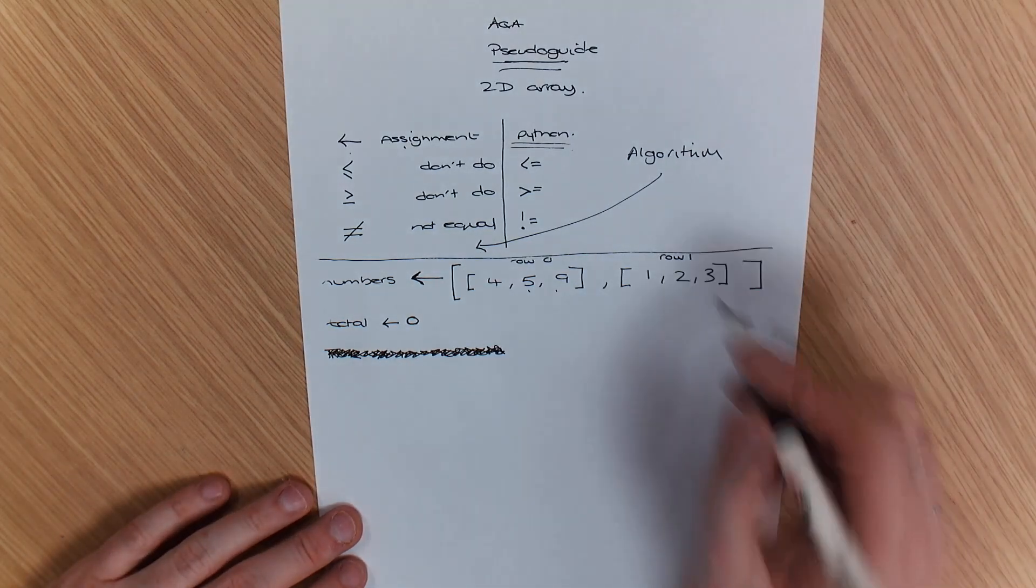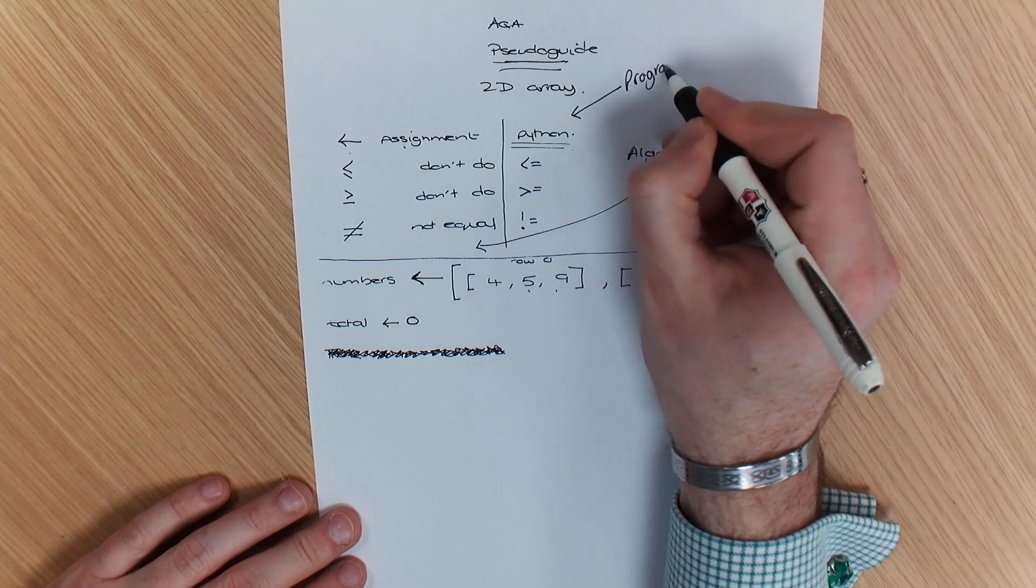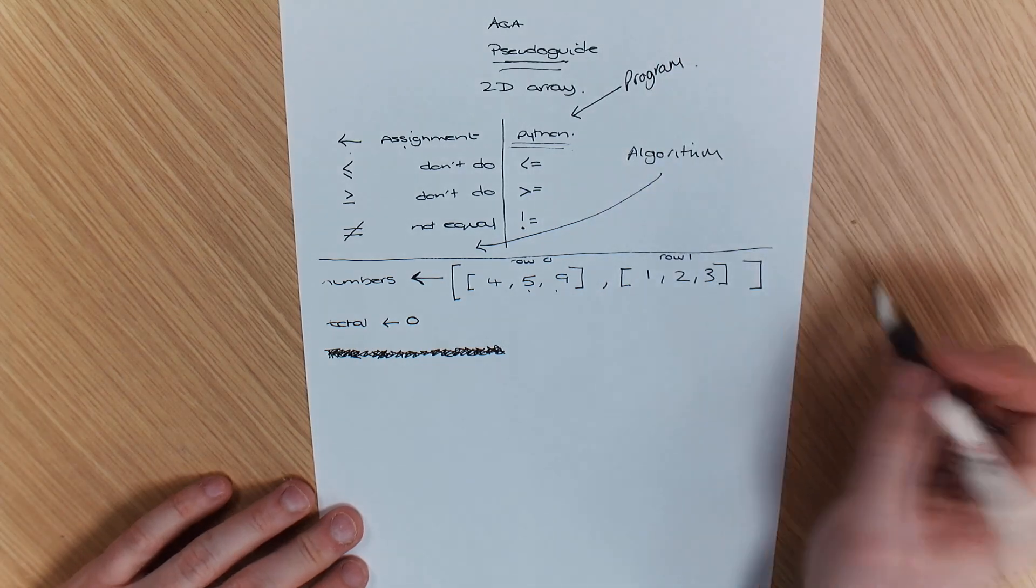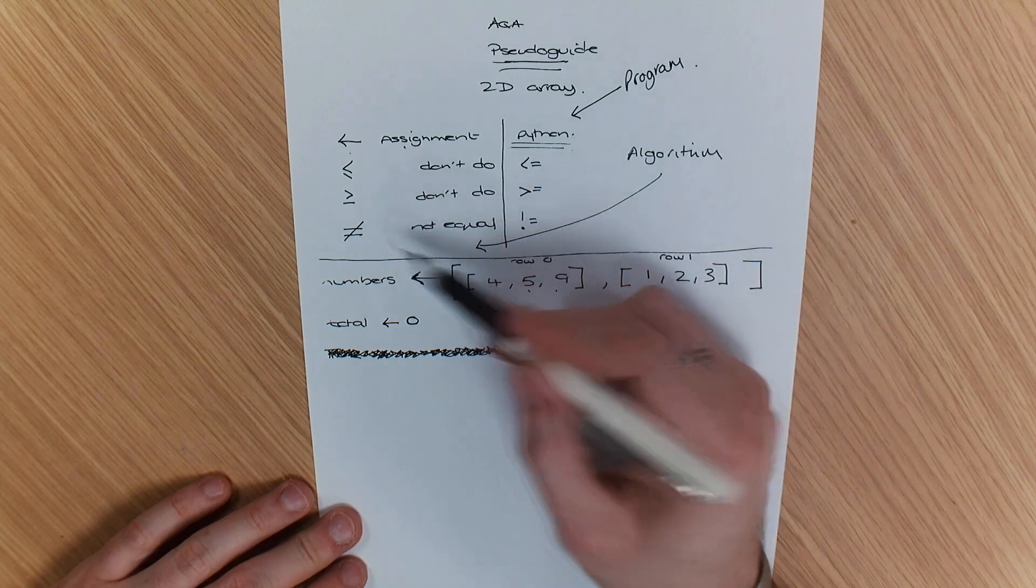If you see in the exam they want you to write an algorithm, you are going for these. If you see program, you go for that. So that's the difference when you're getting those questions. So Python as a program, algorithm is over here.